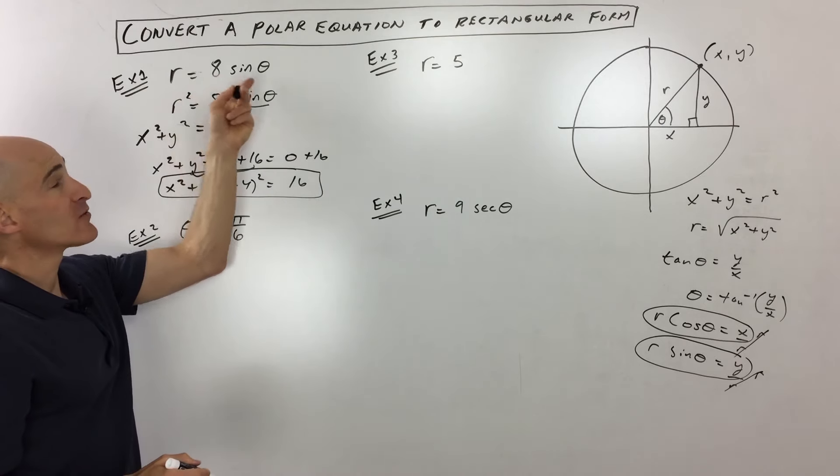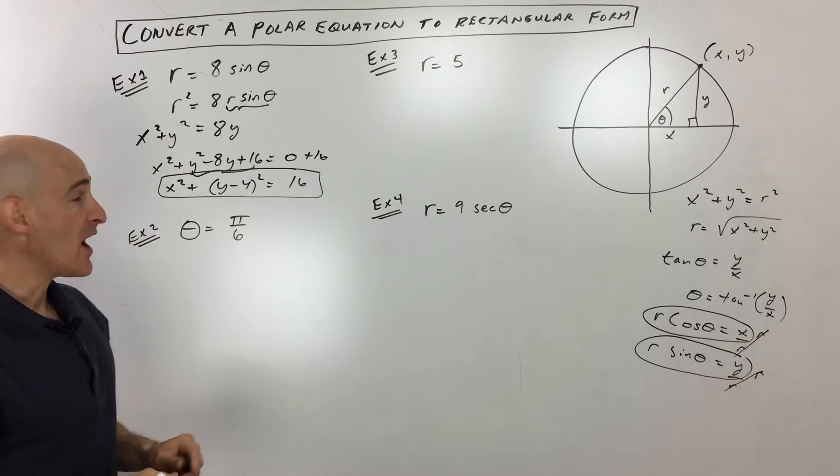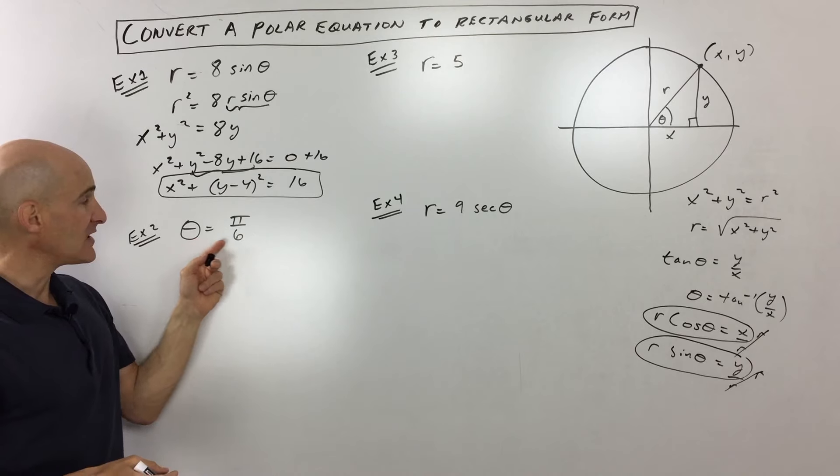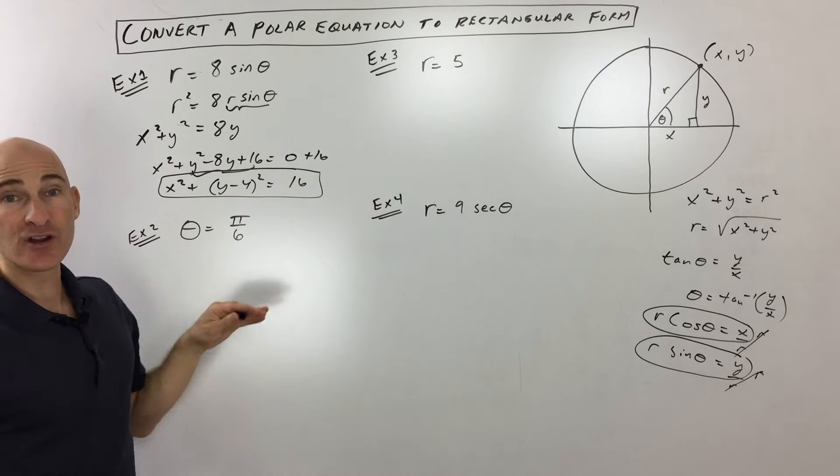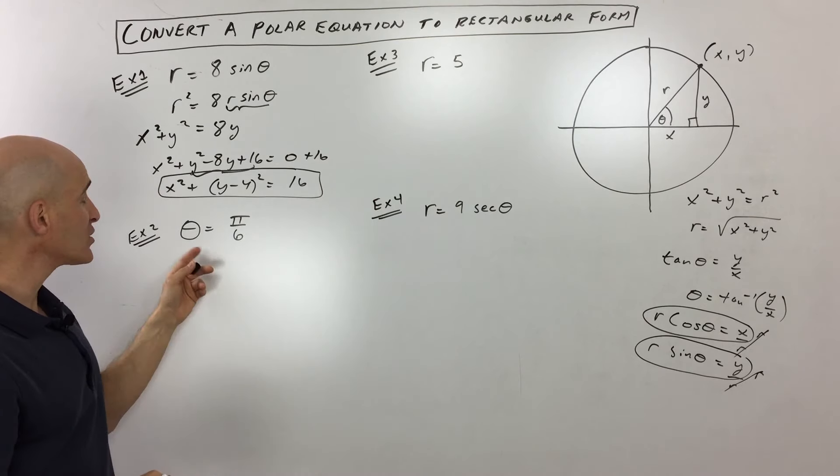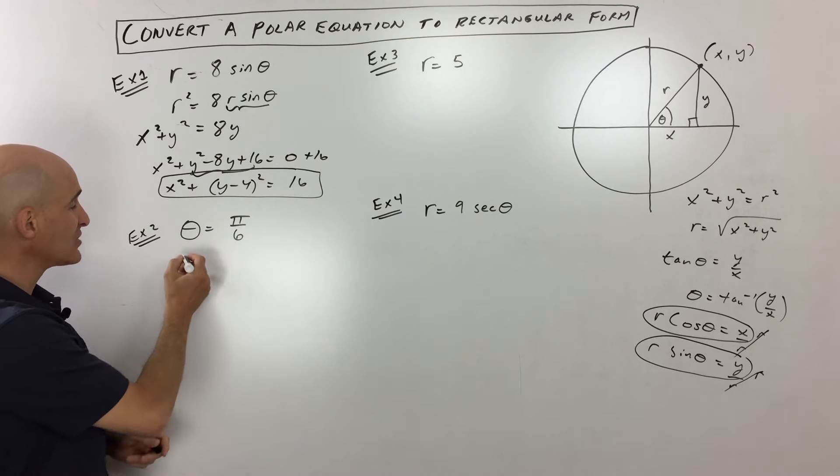So again, the goal is to get rid of r's and thetas, end up with x's and y's. So let's go to example two here. So theta equals pi over six, meaning the angle is a 30 degree angle. Well, what you can do on this problem is you can take the tangent of both sides.